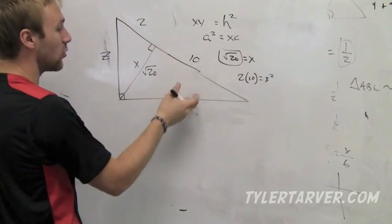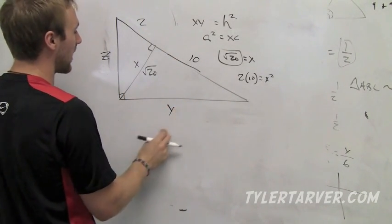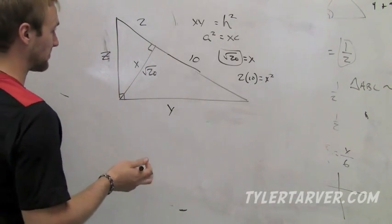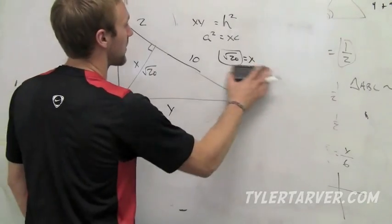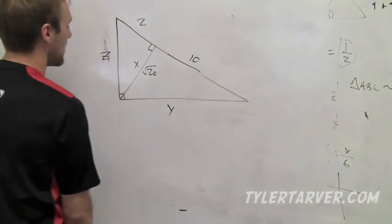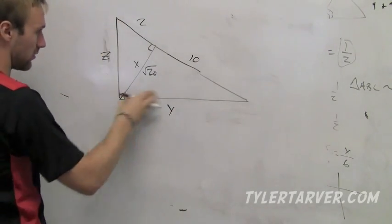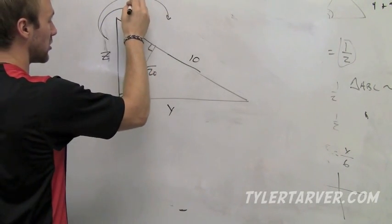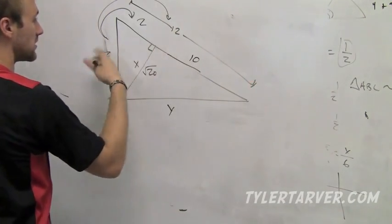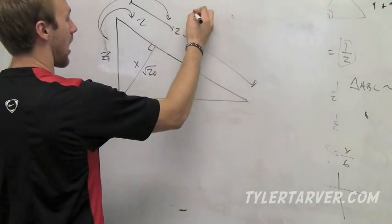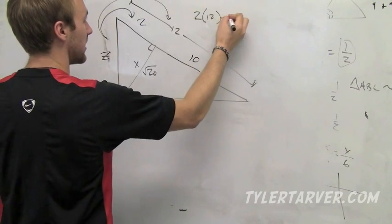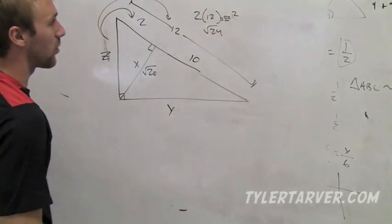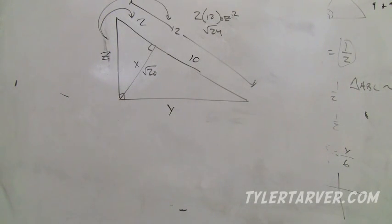Now you have two right triangles here, so if you wanted you could do Pythagorean theorem, or we can do what we just learned. If I got the leg of a right triangle right here, then this and the whole thing, which we know 2 plus 10 is 12, that's going to be our geometric mean. Equals z squared, that's 24, get the square root of 24, do simplest radical form which is 2 times the square root of 6.